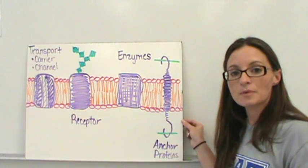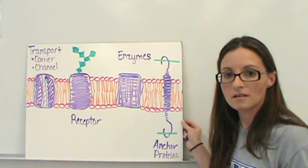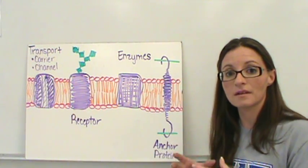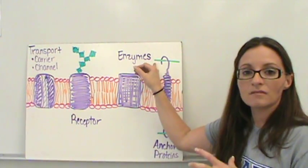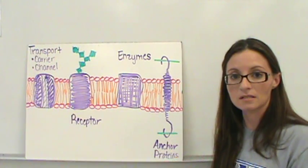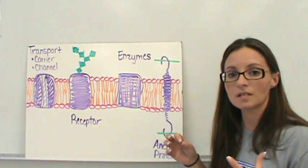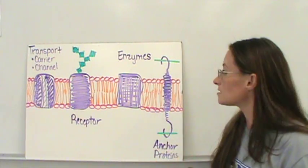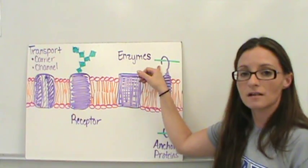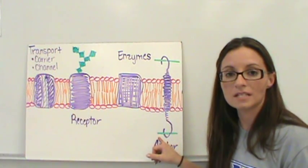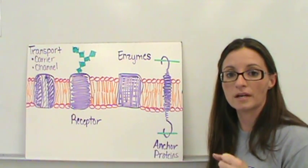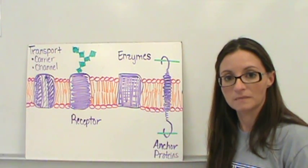Finally, we have anchor proteins. Those anchor proteins help our body and our cells stay in place — stay where they need to be. All the way around our body we have cytoskeleton pieces that keep the cells in place. The anchors are kind of like a bungee cord, anchoring to the outside of the cell and to the inside of the cell. That keeps the cell membrane in place, because it's very fluid and likes to move around.